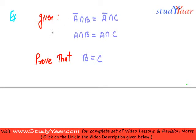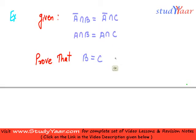Now let's take an example so that we can use the above properties that we have seen, and somehow apply them to reach a result. My question is: I have been given these two conditions, and I need to prove that b is equal to c.